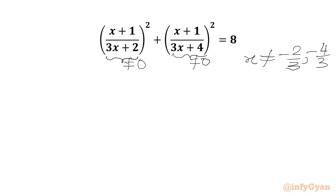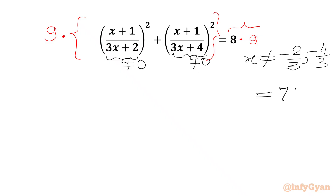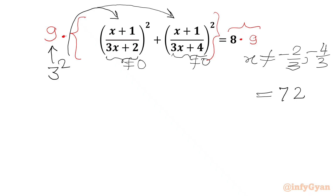Now we will use one algebraic manipulation step. We have to multiply both sides by 9. So we will write times 9 on the LHS, and on the RHS we will write 8 times 9. Now 8 times 9 is 72, so we can write our RHS equal to 72. In the LHS we will write 9 as 3 squared, then multiply 3 squared with (x plus 1) over (3x plus 2) whole squared, and then multiply with our second term.